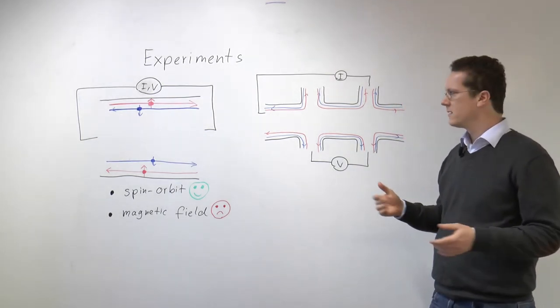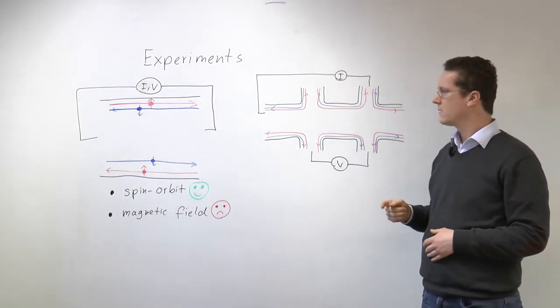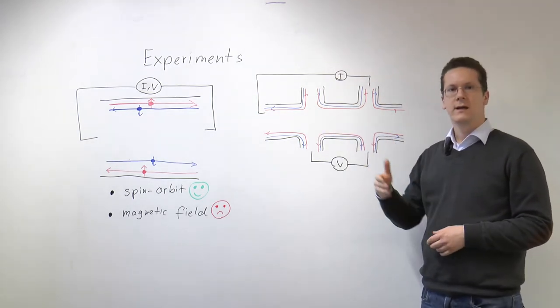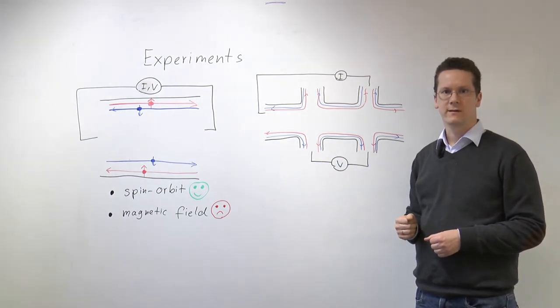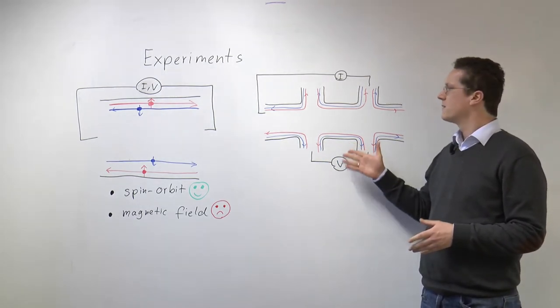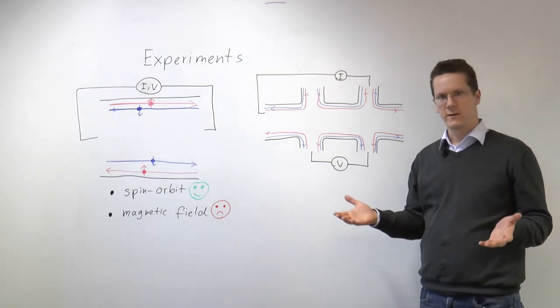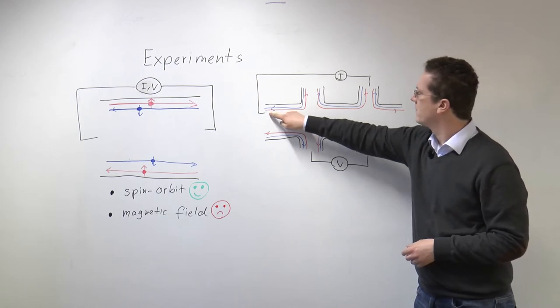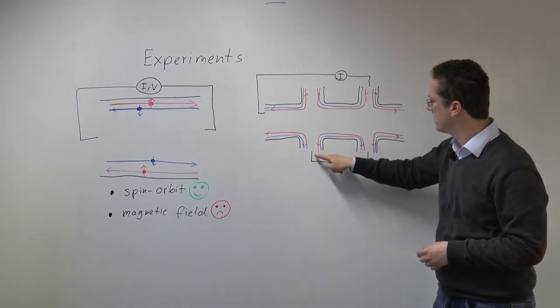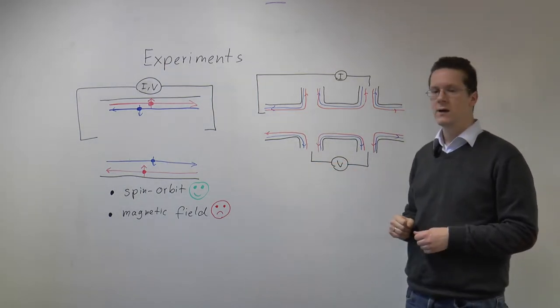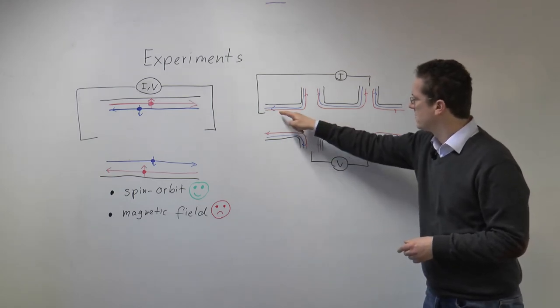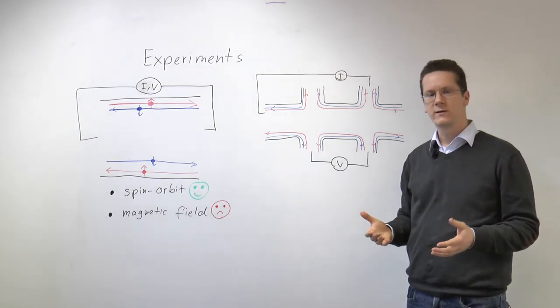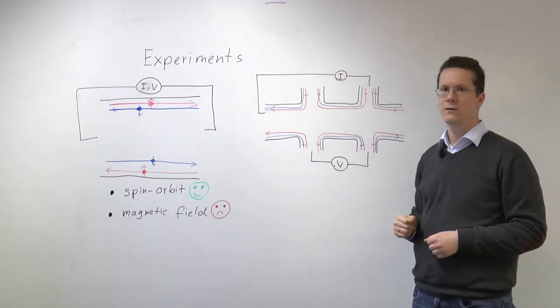Now you've already seen in the quantum Hall effect that you can measure so-called non-local resistances in a multi-terminal setup. In the quantum Hall effect this was the Hall resistance. Now in this case there is no Hall resistance because we have time-reversal symmetry, but still you can measure non-local resistances by for example passing a current through these terminals here and measuring a voltage here. And since you have these reflecting edge channels connecting all these different leads, you will measure characteristic universal values of the non-local resistance.